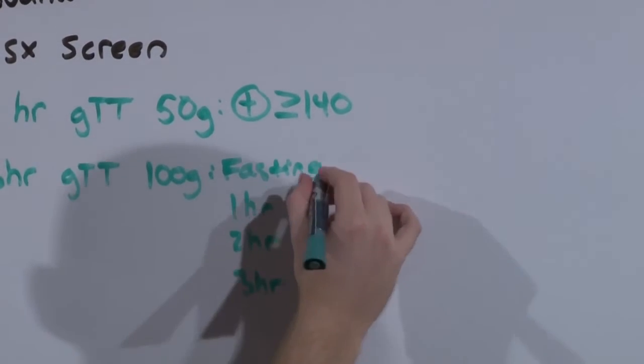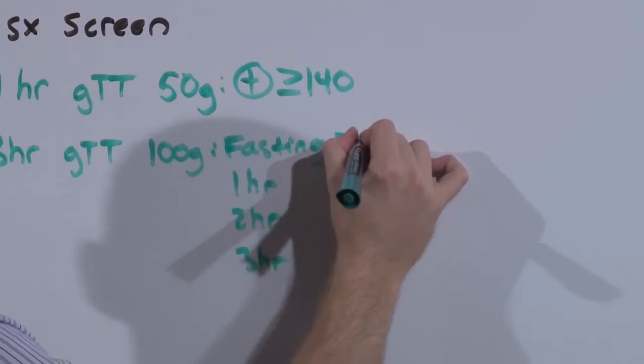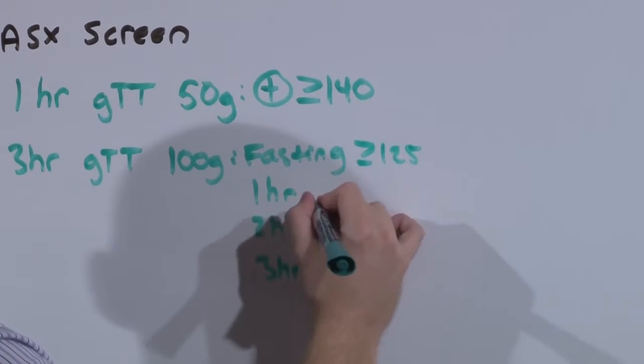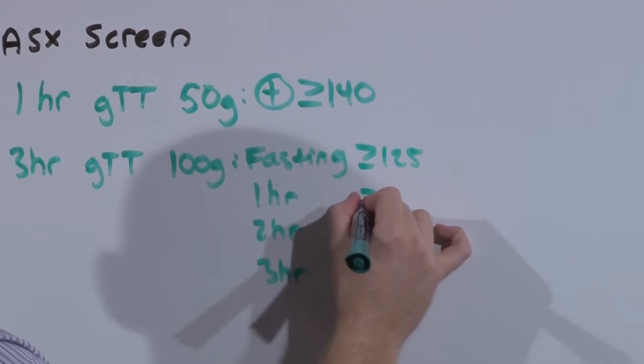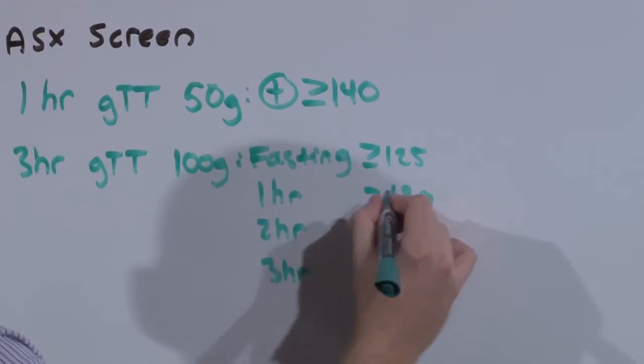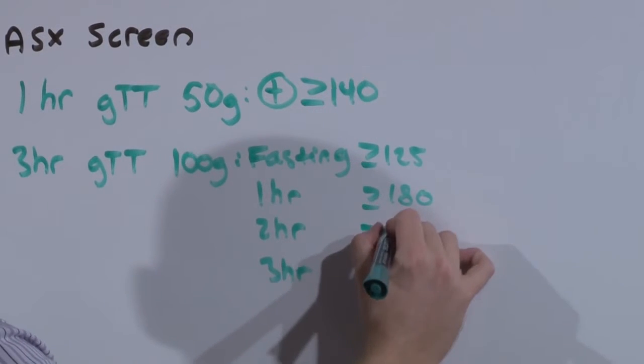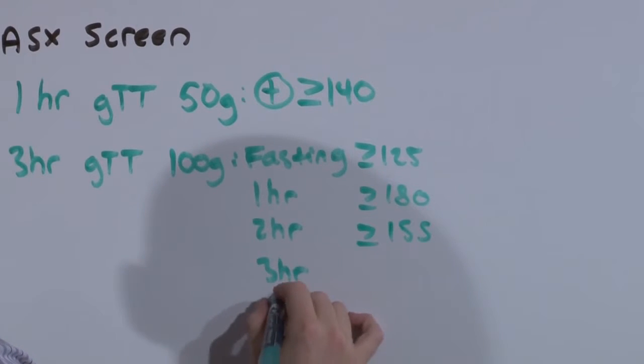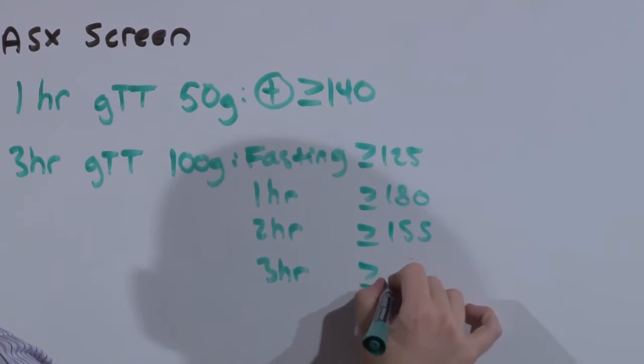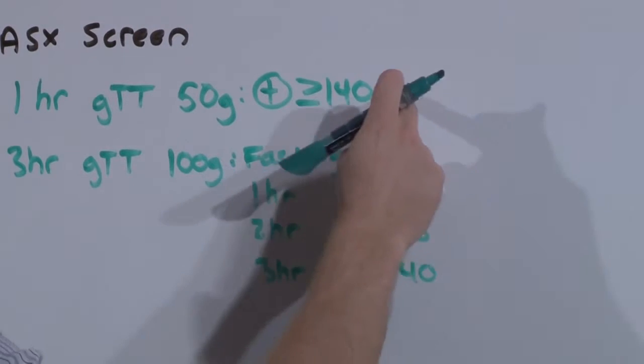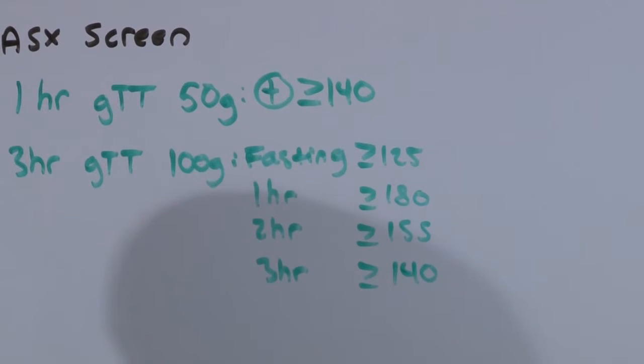The test is positive if the fasting glucose is greater than 125 or if the one hour glucose is greater than or equal to 180, if the two hour test is greater than or equal to 150, if the three hour test is greater than or equal to 140.